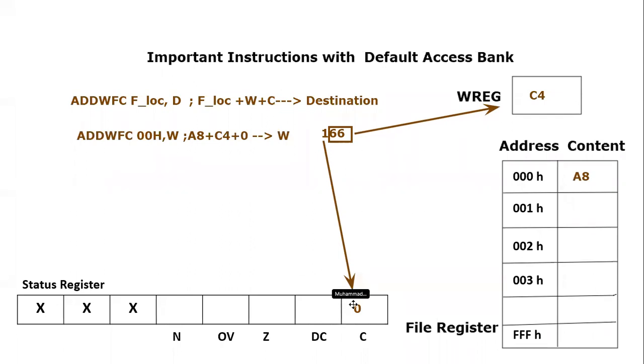So what will happen? We will have to remove it and it will become one, and this will become 6C. Sorry, 6C only. There is a mistake, I missed it. Let me correct it. This is basically 6C, not 16C. Let me write it here: 6C. So I corrected it. 6C is going to this location, so that is why 6C will be here and one will go to carry. That's how this ADDWFC instruction works.